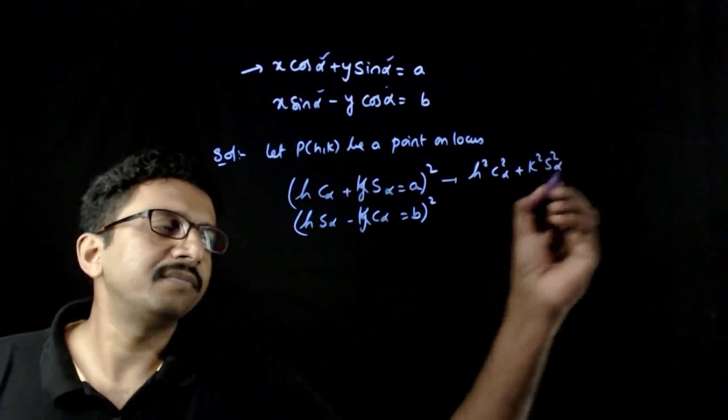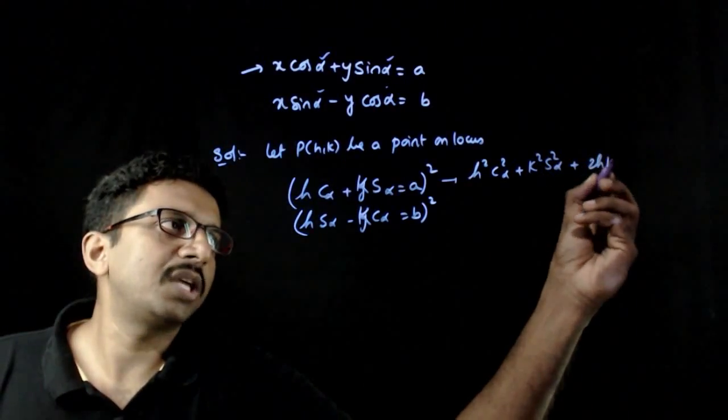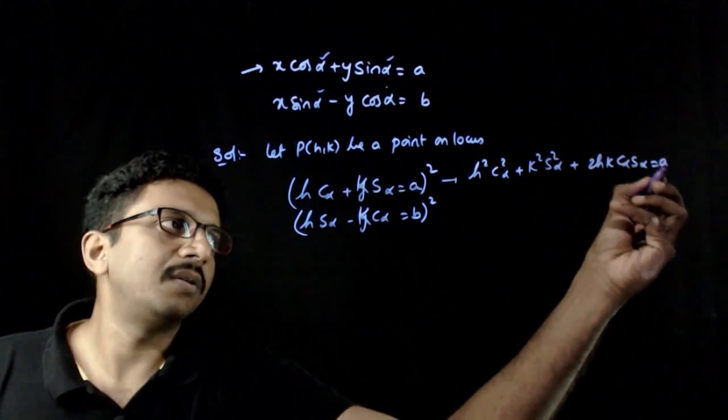So k square sin square alpha plus 2hk cos alpha sin alpha is equal to a square.